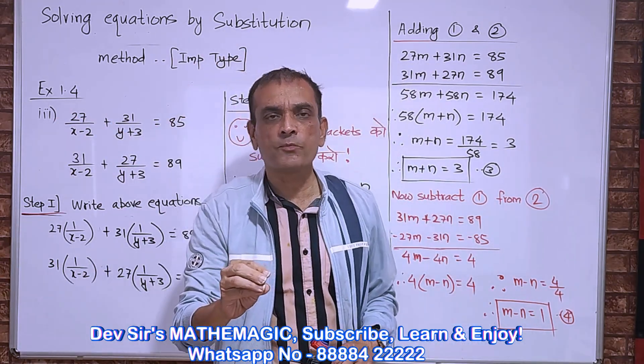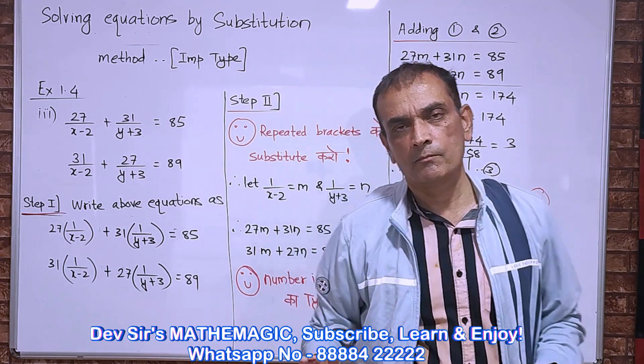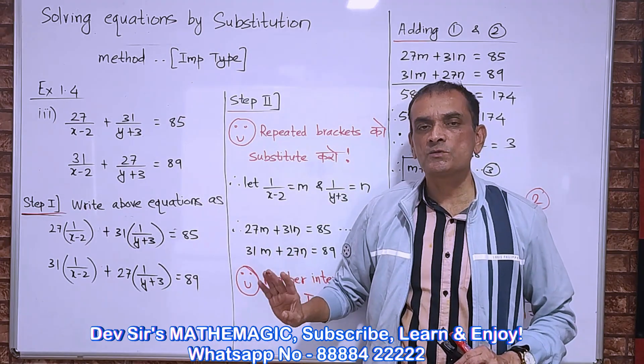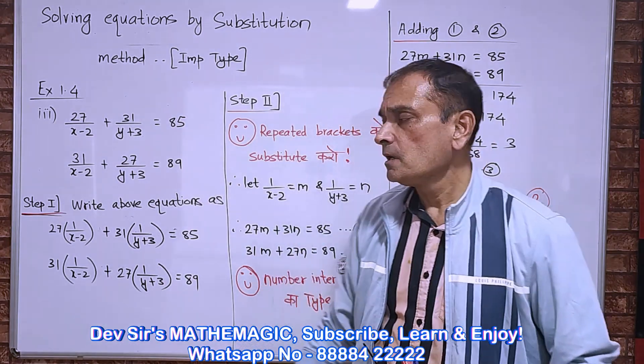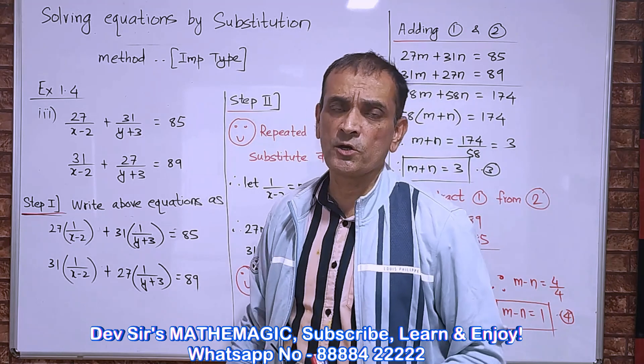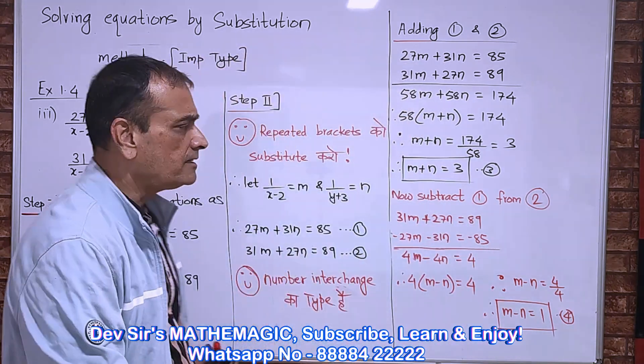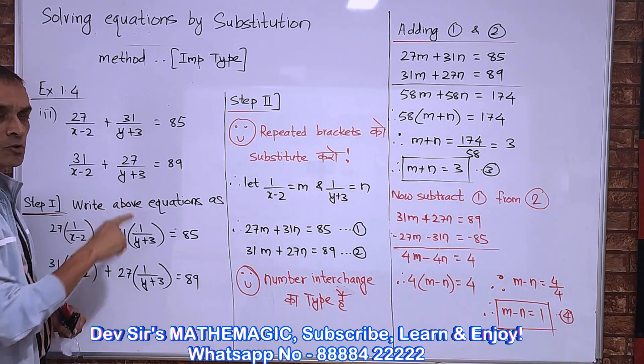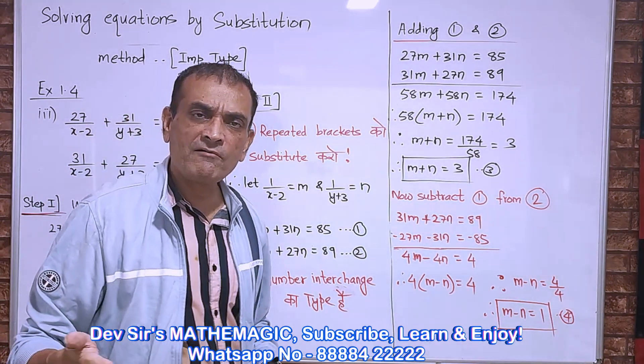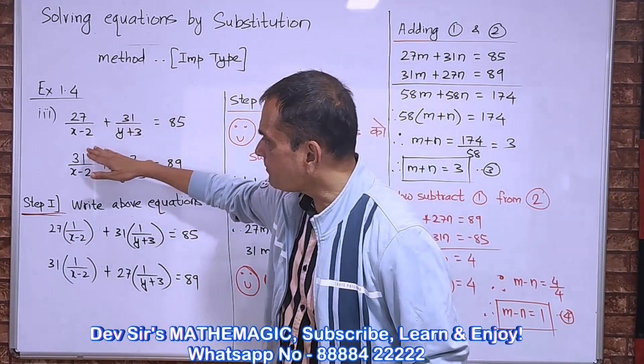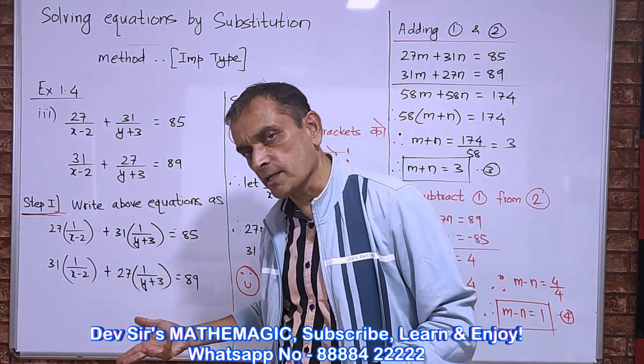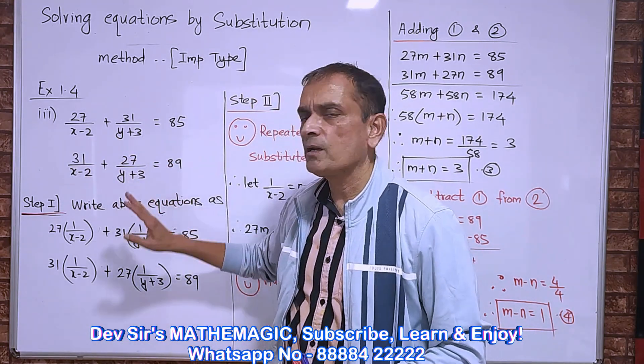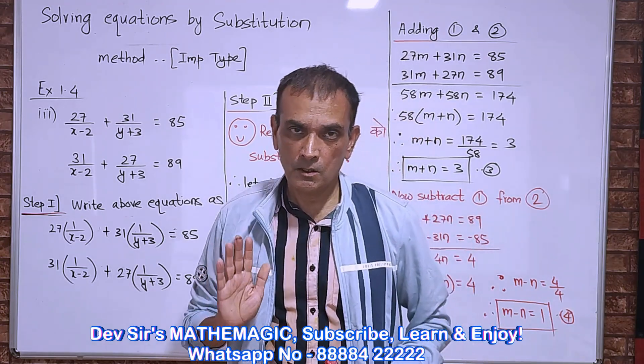So today we'll take an important type: solving equations by substitution method. This is the most important type in this chapter. Now how do you recognize substitution method? There is one clue - in the denominator there are terms of x, like x minus 2y plus 3. Any term of x in the denominator means substitution method.